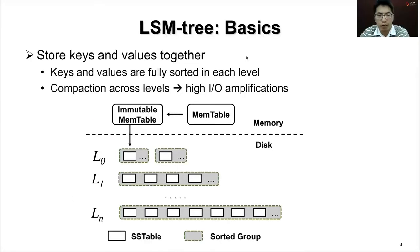The design of the LSM tree basically stores keys and values together to maintain efficient reads and scans. Keys and values are fully sorted in each level. These restrictions are maintained by compaction across levels and eventually lead to high I/O amplification.